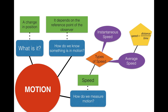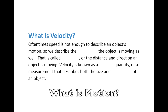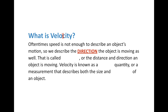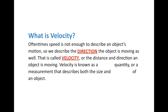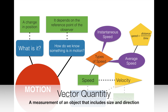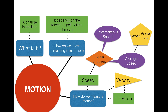What is velocity? Speed and velocity are slightly different concepts. Speed usually isn't enough to describe an object's motion, so we also describe the direction the object is moving. That is velocity — the direction and speed an object is moving. For example, 10 meters per second north, or 10 meters per second up. Velocity is what we call a vector quantity — a measurement that describes both the size and direction of an object's motion.